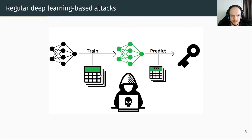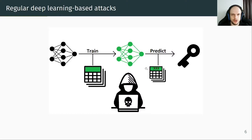The profiling set is a labeled dataset with many traces obtained from different keys. Generally, the profiling set comes from a clone of the device to target. The attack set is an unlabeled dataset with a certain number of traces and a fixed unknown key — it comes from the device to target. We use the profiling set to train the network to classify each trace with their corresponding key value, similar to classifying handwritten letters. Once the training is finished, we use the attack set to predict the key of the target device with as few traces as possible.